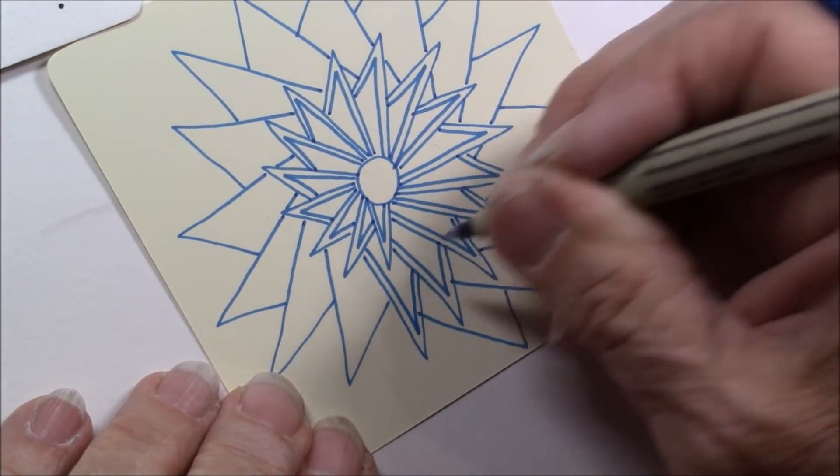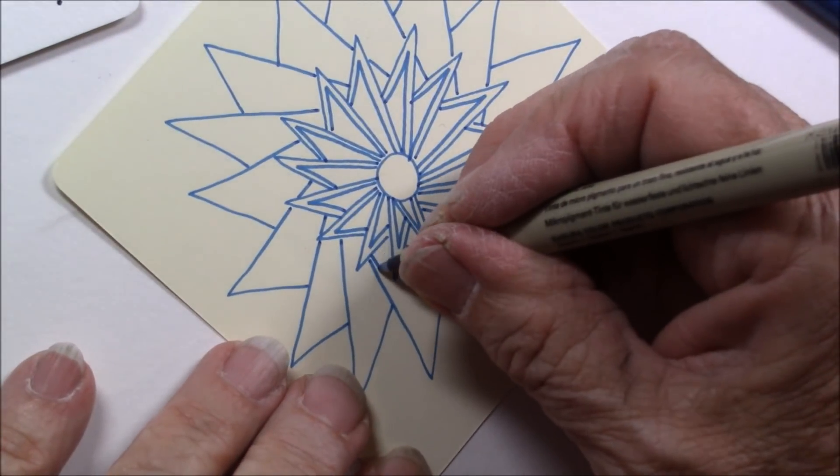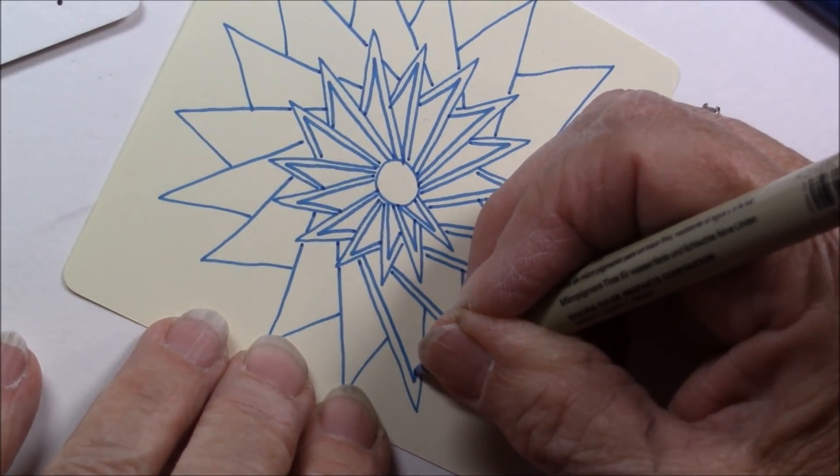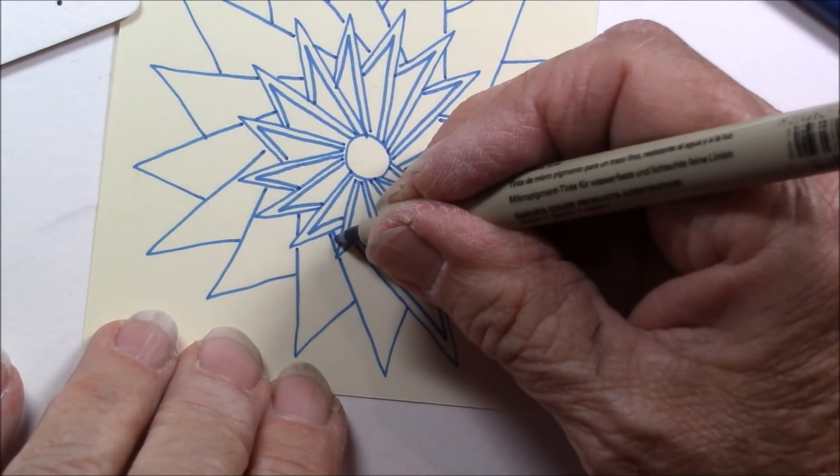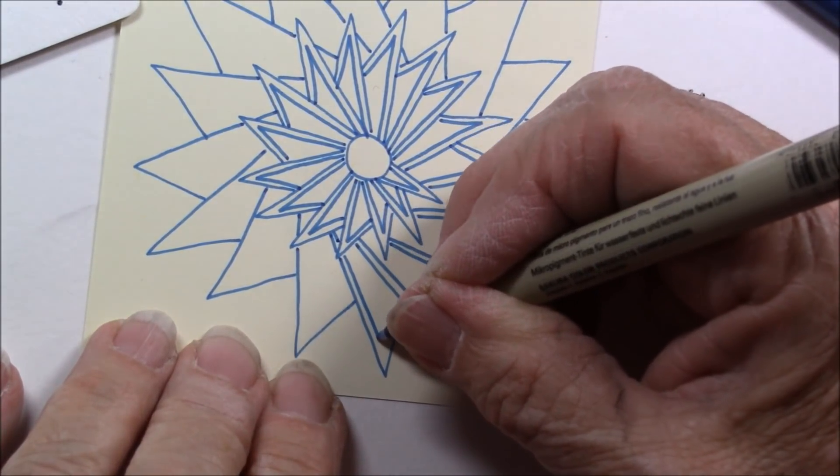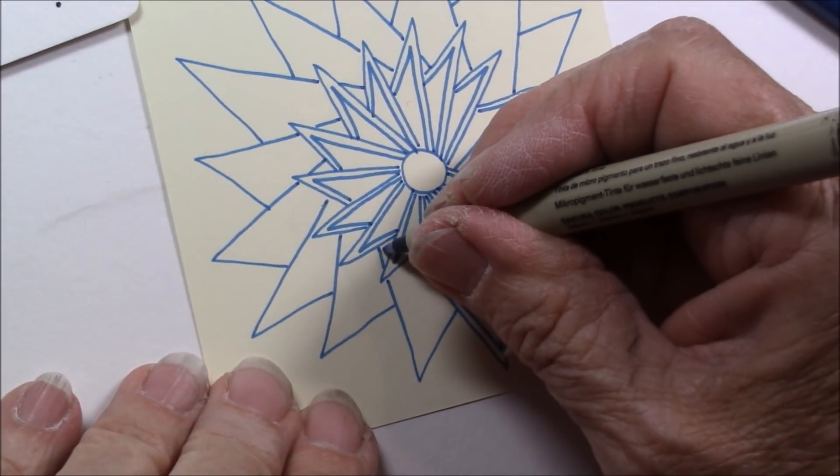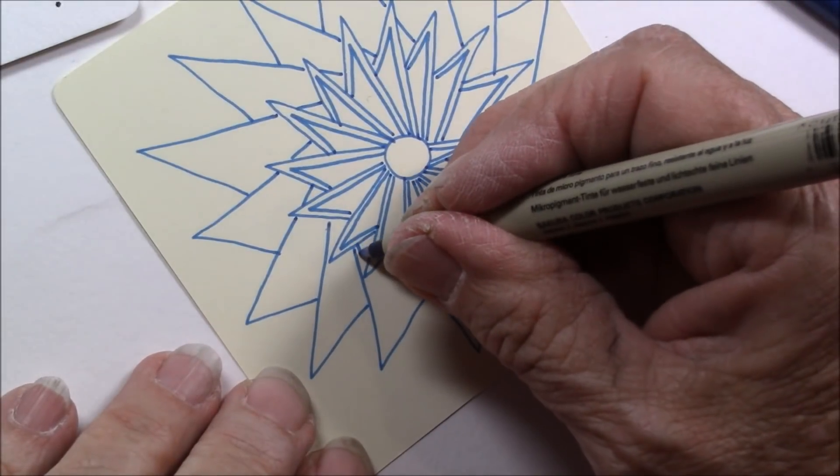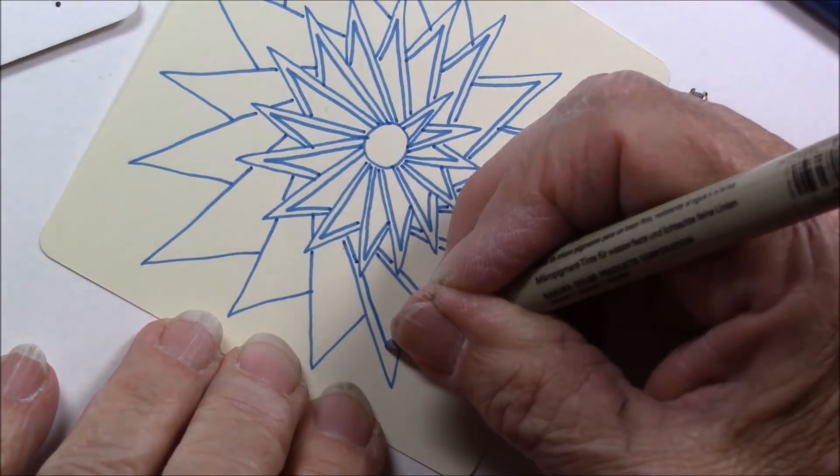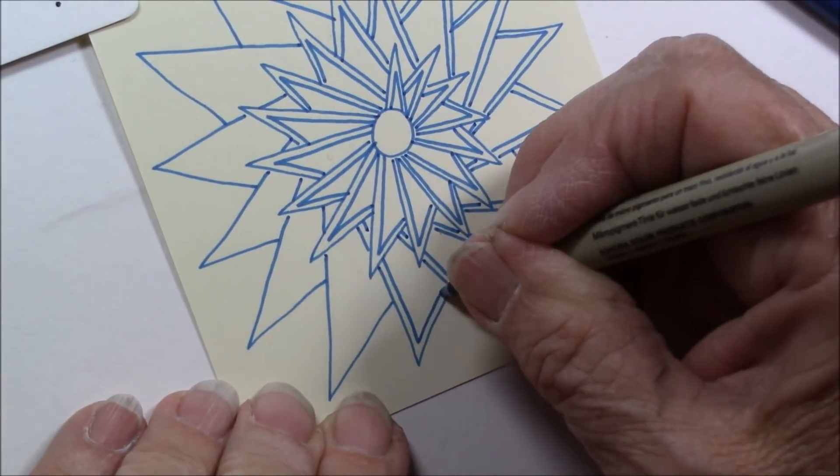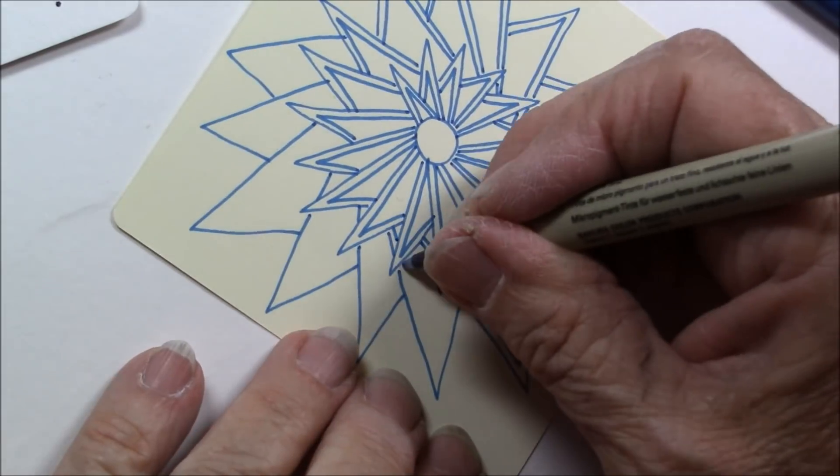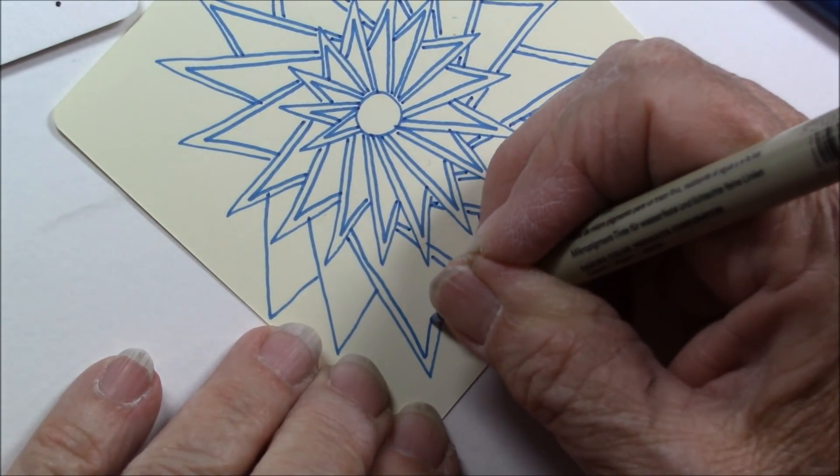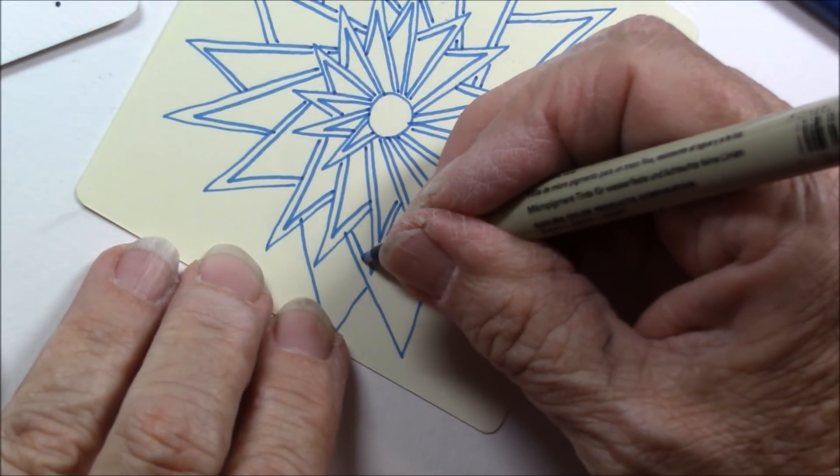Auraing each one of those little pointy triangular shapes, and you see I keep my pen flat, and I rotate my tile. I find that a little easier for me to get a nice, even, little Aura, and if it's not even, I really don't worry too much about it. And I'm just working my way all the way around. I'm almost to the end.